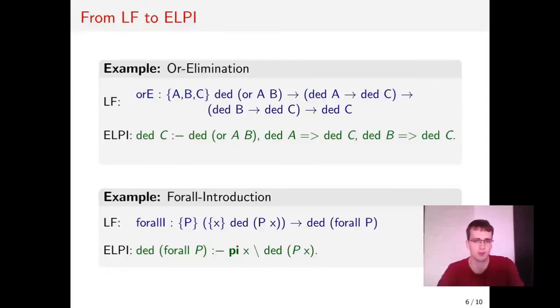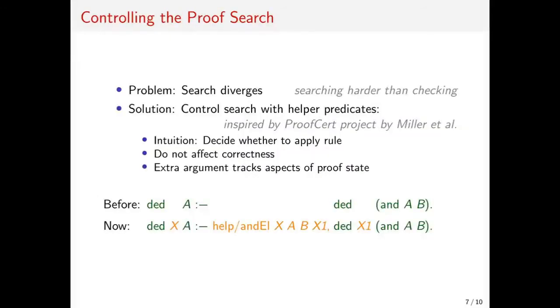To fix this, we somehow have to control the search. This turns out to be rather tricky, which nicely illustrates that proof search is much harder than proof checking. To control the search, we decided to use helper predicates, which is an approach that was inspired by the ProofCert project. They used it only for focused logics, but we don't restrict ourselves to that.